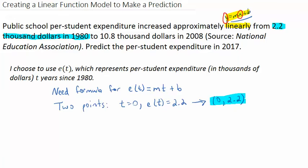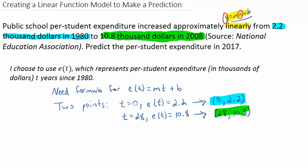That's the blue data up here in the paragraph. Then I know the expenditure of $10,800 was measured in 2008. So that means when t is, well, 2008 is 28 years after 1980. So that means t is 28. The expenditure per student was $10,800. So I get the ordered pair, 28 comma 10.8. So this point represents the green data from the sentence.